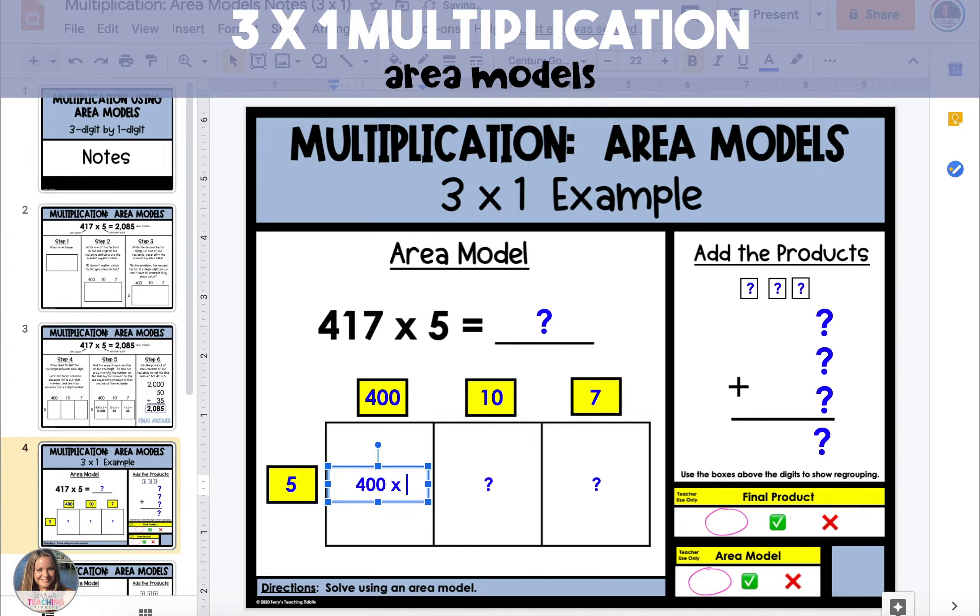So in the first section we have 400 times 5 which is 2,000. In the middle section we have 10 times 5 which is 50 and the last section is 7 times 5 which is 35.